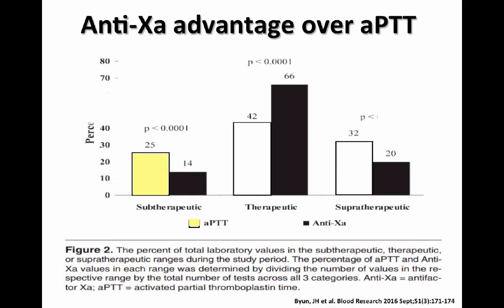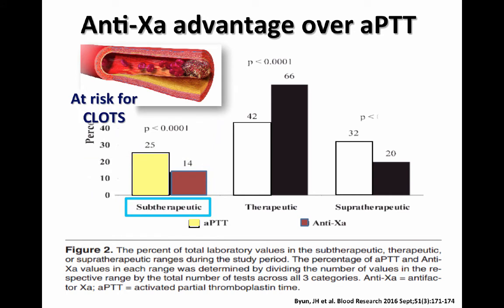So why are we choosing anti-Xa over PTT for monitoring our heparinized patients? In this chart, you can see the PTT results are in yellow, and these were compared to anti-Xa lab results. On the left bar, you can see that more PTT results were in the subtherapeutic range than the anti-Xa. This means that these patients were at risk for clots because they weren't getting enough of the heparin that they needed.